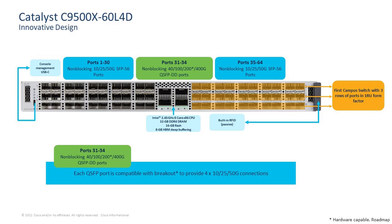Now let's look at the actual front panel view of the box and understand how we're able to achieve such high port density on a 1RU form factor. Traditionally, network devices have two rows of ports, but here we are packing three rows of ports. When you look at the picture on the screen, you can see row one, row two, and row three, and because we're using three rows we're able to pack in 60 ports into a 1RU form factor design.